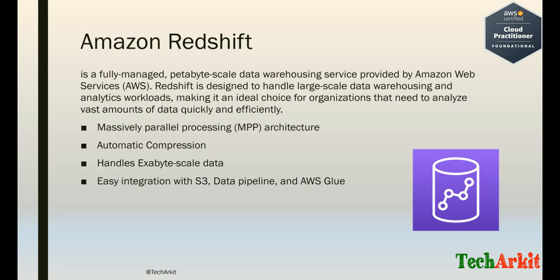Redshift uses a massively parallel processing architecture, meaning all processing threads can run at the same time — not serially. Multiple processes run simultaneously, which is a huge benefit for analysis and reporting, greatly reducing the time required. It also supports automatic compression, which saves storage. This architecture handles exabyte-scale data and provides easy integration with S3, Data Pipeline, and AWS Glue.